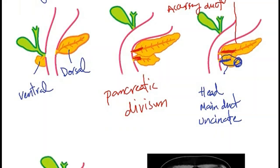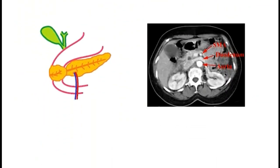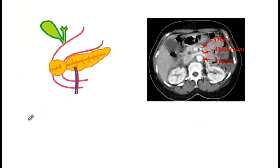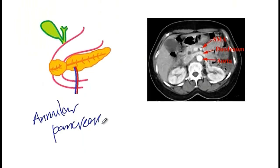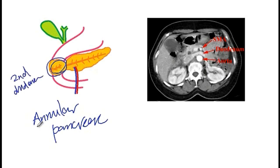One important condition is annular pancreas. During rotation of the ventral bud, it rotates around the second part of the duodenum, causing narrowing of the duodenum — this is annular pancreas.